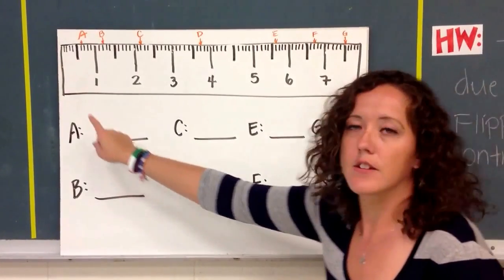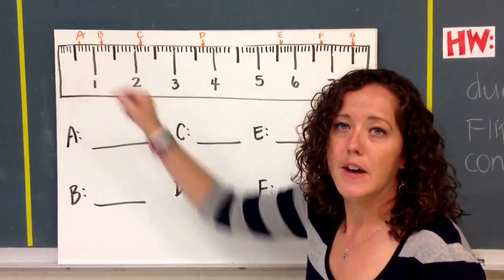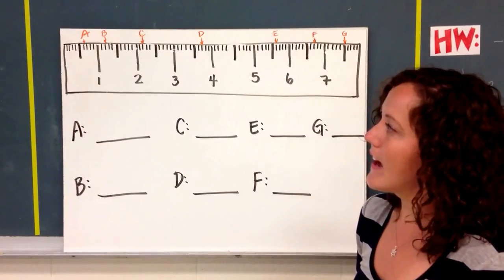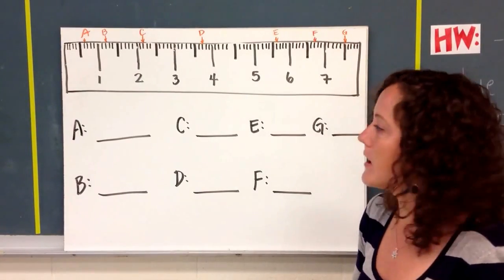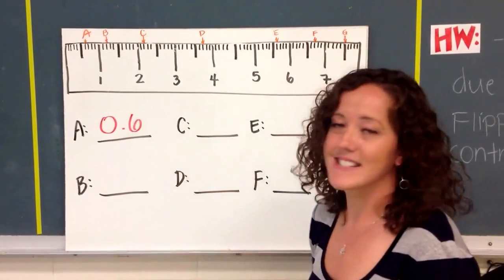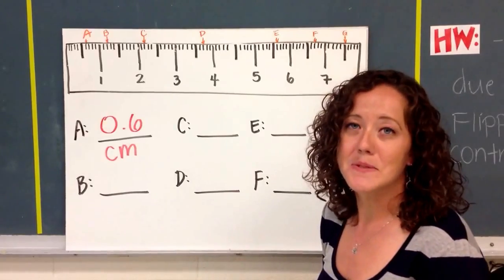For letter A, you'll notice that the arrow is in between 0 and 1. And so you have to look at the smaller marks in between 0 and 1. And when you count them, you should count that there are 6. And so when we put this in decimal form, we end up with 6 tenths. We want to remember units. I don't have a whole lot of room, so I have to write it underneath.